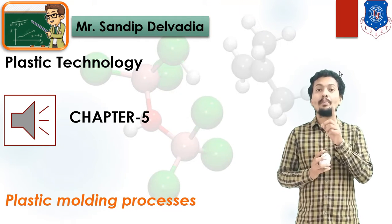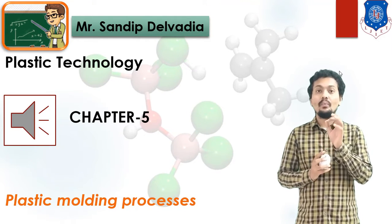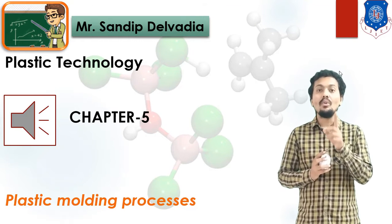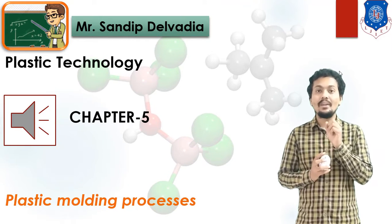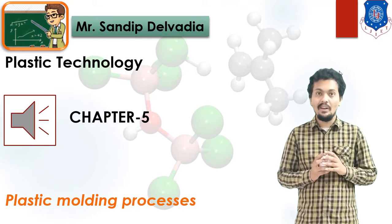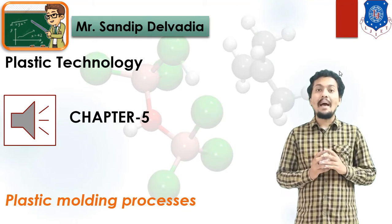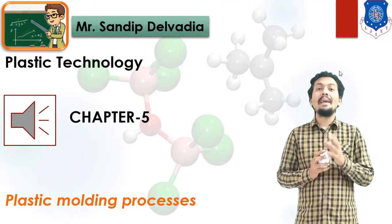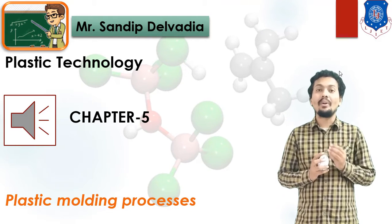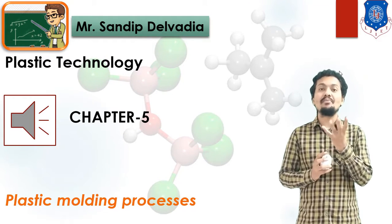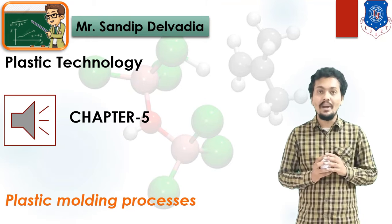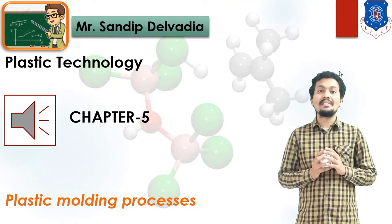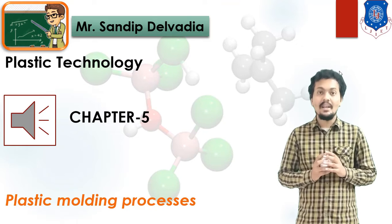In Thermoplastic, we can reshape our plastic material. With the application of heat, we can make a component by changing the shape of the plastic. We have also discussed the different Plastic Moulding Processes, whose purpose is to make components or products of plastic.